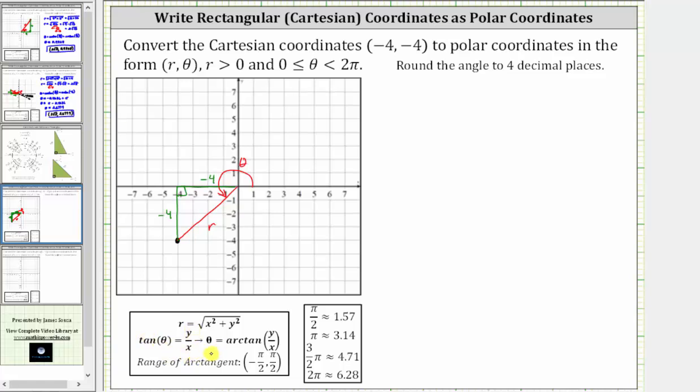So for theta, we have theta equals arctangent of y divided by x. We need to be careful when determining the angle theta though, because the output or range of arctangent is the open interval from negative pi over two to positive pi over two.